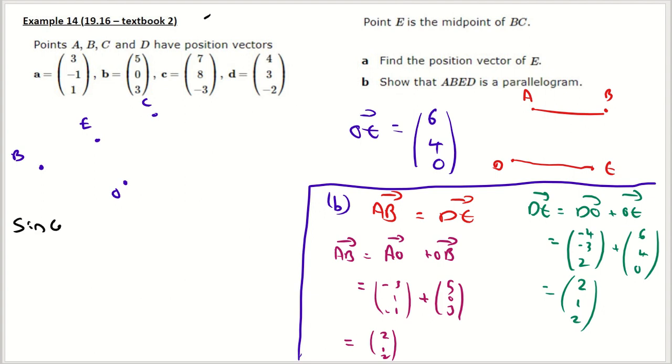So, since A, B vector, equals the vector D, E, A, B, E, D, is a parallelogram.